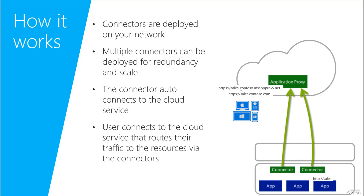If you've already verified your domain names using Azure Active Directory, you can use that domain name instead — for example sales.condozo.com, something easier for users to remember. The connector connects to the cloud service, and the user uses the URL to connect to the application. The application proxy service gives access to the user for that specific application. The good thing is you don't have to open any ports on your firewall — this is all done through the connector and the service.